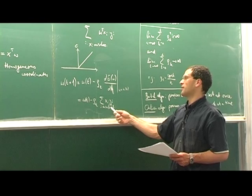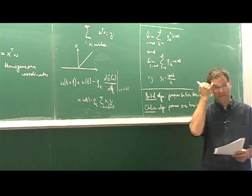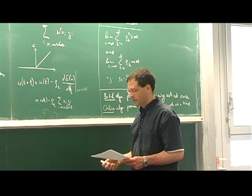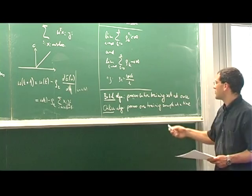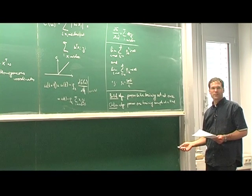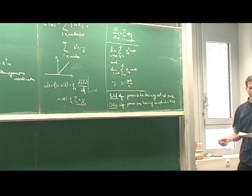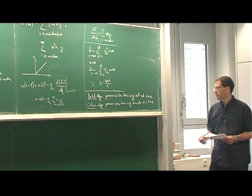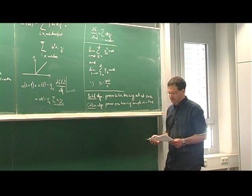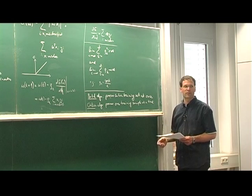In online updates, instead of summing over all misclassified samples, you look at each new training sample in turn: if it lies on the correct side of your decision boundary you do nothing; if it lies on the wrong side you tweak your decision boundary by just a little bit. The advantage of such online algorithms is that you don't even need to store your entire training set at once — especially useful if you have a small device, little memory, and a huge data stream. However, this introduces some order dependence: the result will depend on the order in which training samples are presented.